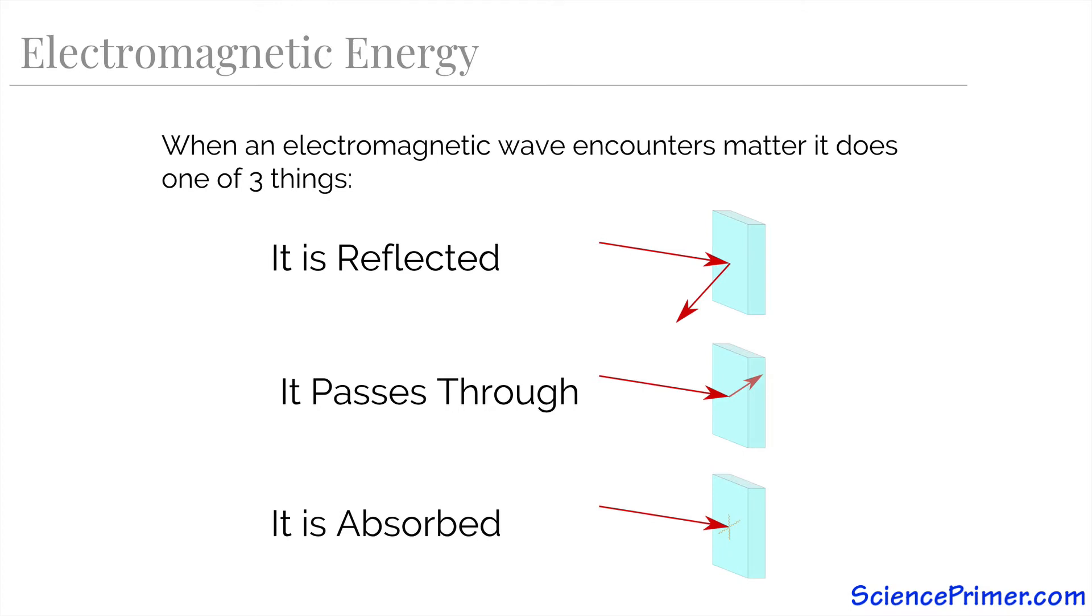Finally, it can be absorbed. It is through absorption that the energy contained in the wave is transferred to the matter that absorbs it. Which of these three interactions occur depends on the specific characteristics of both the electromagnetic energy and the matter involved.